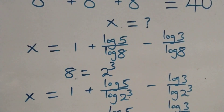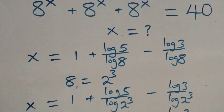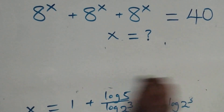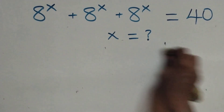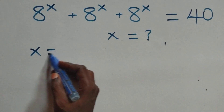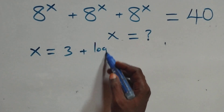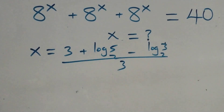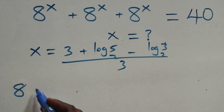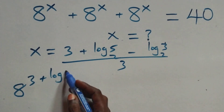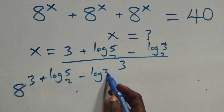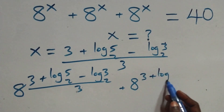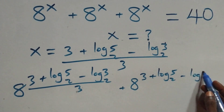Let's check here — let's check if this satisfies this problem. That is, we substitute the value of x back in. What we have is x equals to 3 plus log 5 base 2 minus log 3 base 2, all over 3, and we verify this equals 40 on this side.